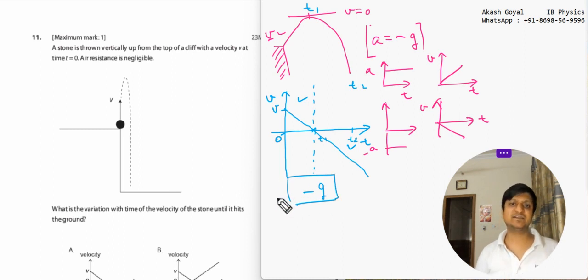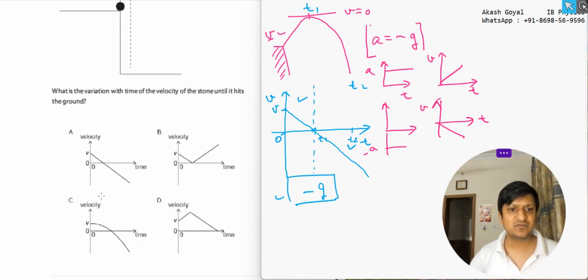So, our answer will be similar to this graph. We will check the options available. We have four options. Option A looks similar to the graph that we have drawn.